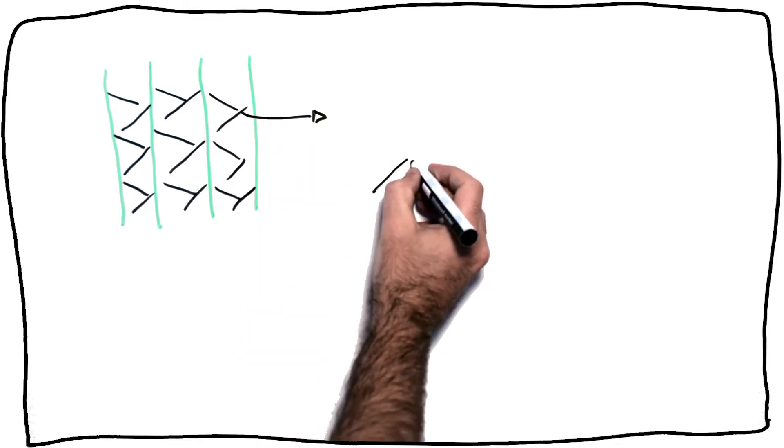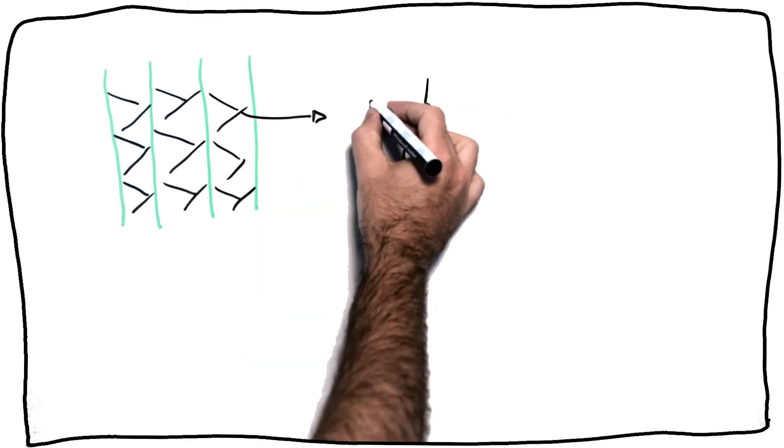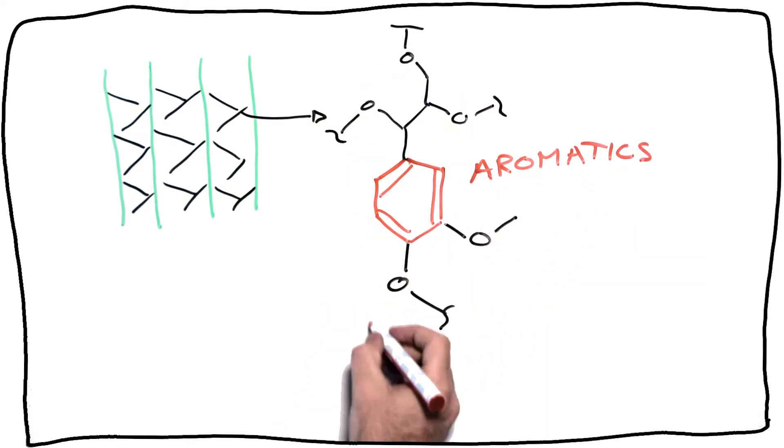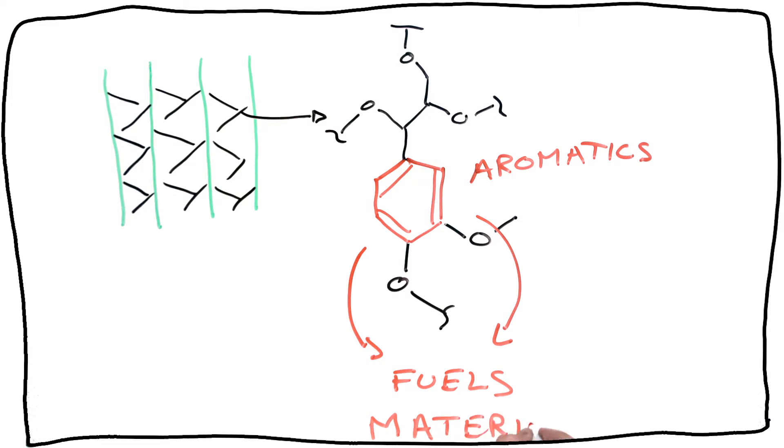Lignin is a complex aromatic polymer that makes lignin a renewable resource of aromatics and its valorization into fuels and materials is critical for the substitution of fossil fuels.